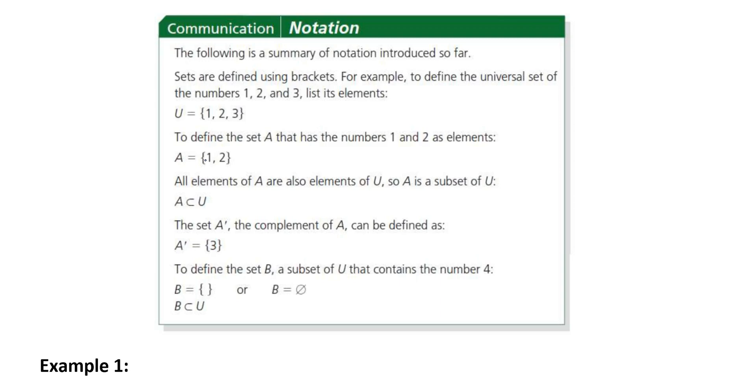To define the set B as a subset of U that contains the number 4, well, they're showing you the two braces still, or the two brackets, but there's nothing inside. So, that means it's an empty set. And you can also use this as an empty set. So, B is a subset of U, but it's empty. There's nothing in there. And the more we move along, you'll get more and more comfortable with the notation.